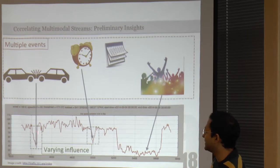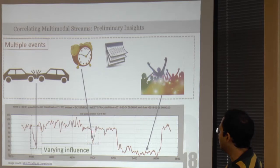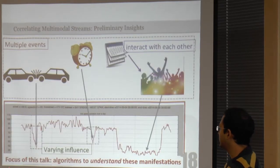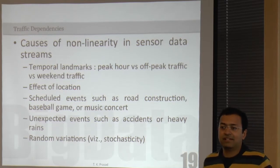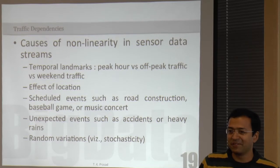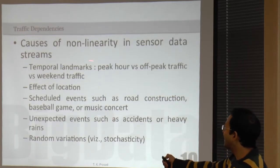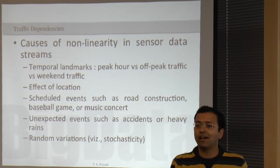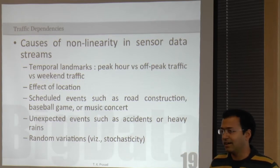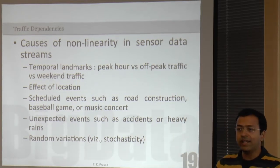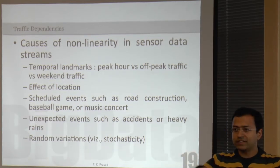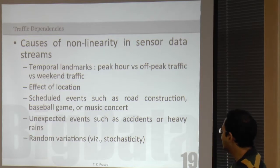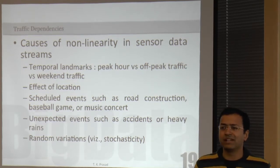What are the reasons for these non-linearities? Temporal landmarks — morning and evening peak hours — might result in speed dips. The location of the link also matters: downtown links might be much more crowded than suburban links. There may be many events surrounding these links, and unexpected events like accidents might also cause non-linearities. This is a very stochastic domain with a lot of randomness — sometimes an event might result in a delay and sometimes it may not. If the link is not at all occupied, then you don't expect delays.